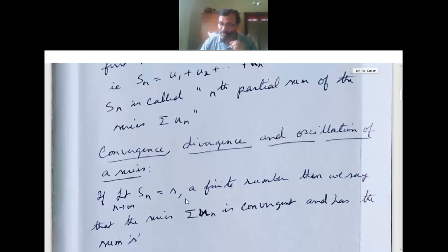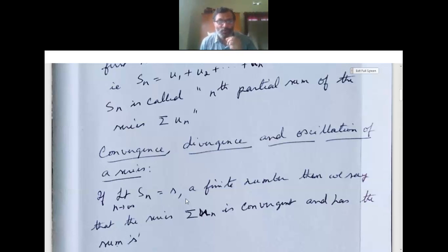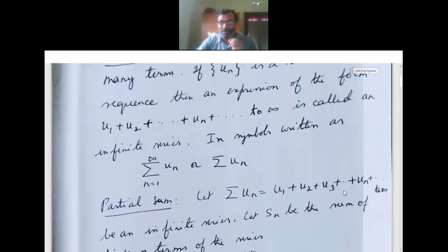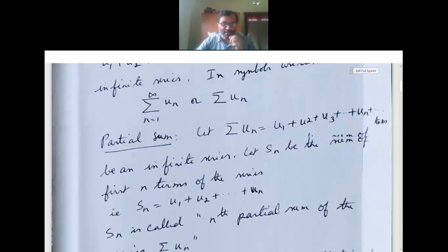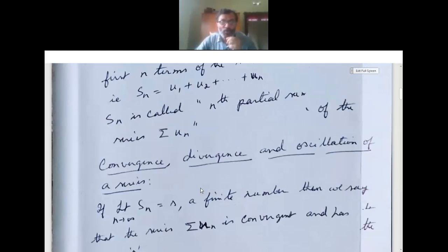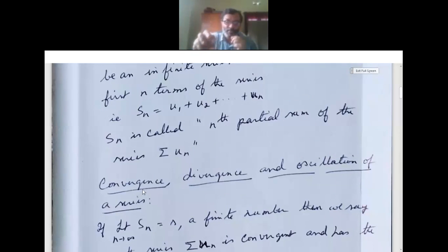Then the series sigma un is convergent. Given an infinite series u1 plus u2 plus u3 and so on, first we write Sn — the sum of n terms, that is u1 plus u2 plus u3 till n terms. This is called the nth partial sum of the series sigma un. Then we find out whether a series is convergent. Convergence means we get a definite, finite answer.